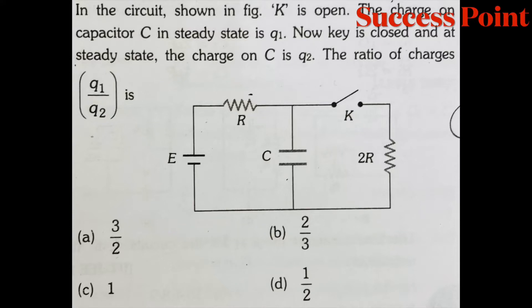In the circuit shown in the figure, K is open. The charge on the capacitor C in steady state is q1. Now the key is closed; at steady state the charge on C is q2. The ratio of charges q1 upon q2 is — options: (a) 3/2, (b) 2/3, (c) 1, or (d) 1/2.